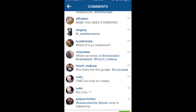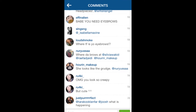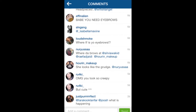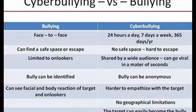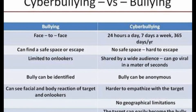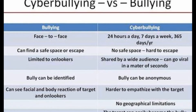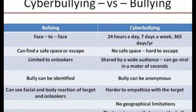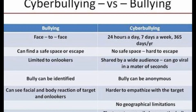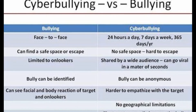With the prevalence of social media and digital forums, comments, photos, posts, and content shared by individuals can often be viewed by strangers as well as acquaintances. The content an individual shares online — both personal content and any negative, mean, or hurtful content — creates a kind of permanent public record of their views, activities, and behavior. This public record can be thought of as an online reputation, which may be accessible to schools, employers, colleges, clubs, and others who may be researching an individual now or in the future.